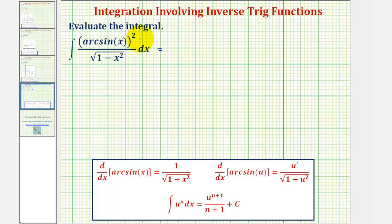To help recognize this, let's rewrite this as the integral of arc sine x to the second times one over the square root of one minus x squared dx.